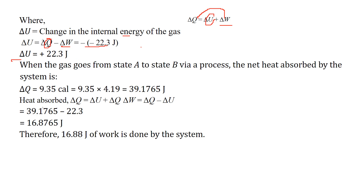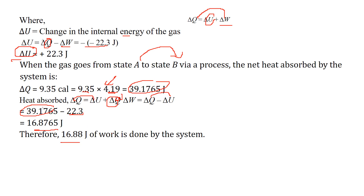When the gas changes state from A to B via another process, the net heat absorbed by the system is 9.35 Calories. Converting to Joules: 9.35 × 4.19. From the first law, delta W equals delta Q minus delta U. Substituting the values and subtracting gives delta W equals 16.88 J. This is the amount of work done by the system.